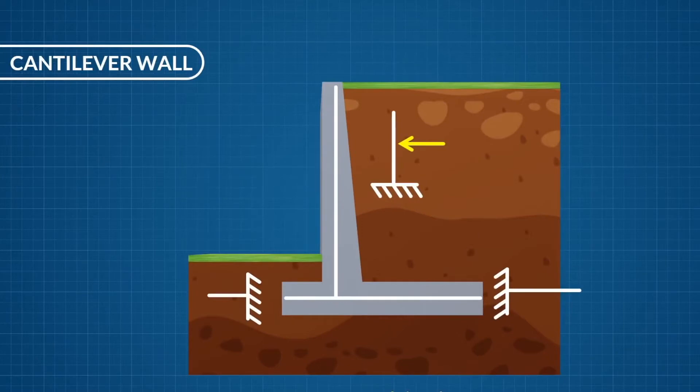The heel acts as a horizontal cantilever under the action of net soil pressure. Here you can see the deformed shape of the wall under these combined forces.